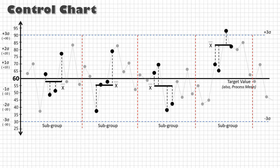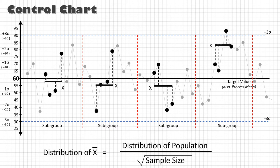But according to statistics, distribution of this X-bars is equal to the distribution of the population divided by the square root of sample size.